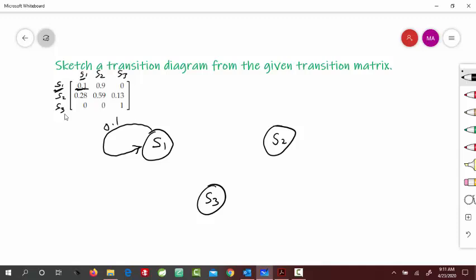Then from S1 to S2, in the first row and second column here, this is 0.9, going from S1 to S2. We will start our arrow and take it towards S2 and put this value here, 0.9.